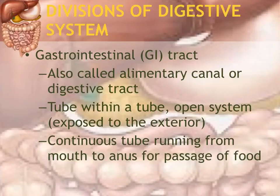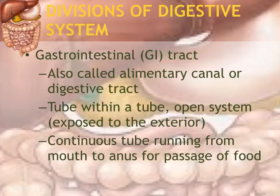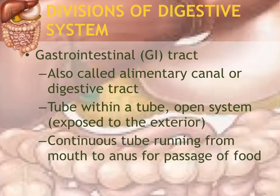There are two major divisions of the digestive system. The first one is the gastrointestinal or GI tract, also called the alimentary canal or just the digestive tract. It is a tube within a tube — if you think of the outer tube as being the body and the inner tube as the digestive tract, you get the idea of how it's set up. Food inside the digestive tract is actually exposed to the outside through the mouth and the anus; it is an open system that continues from mouth to anus, with all organs connected and sharing the same passageway for food.